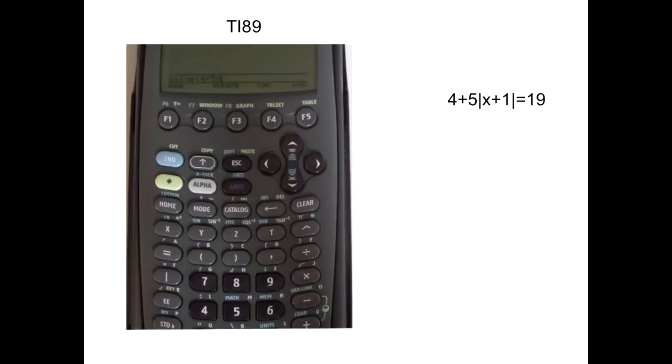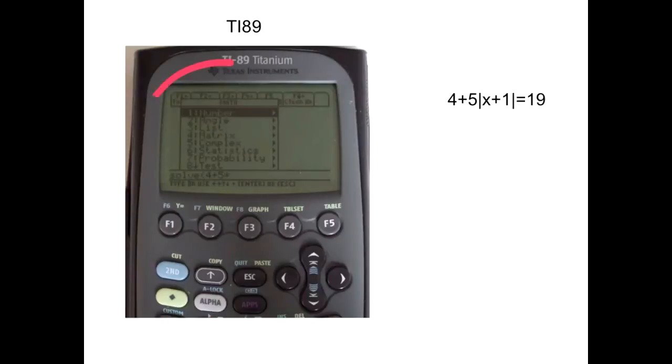To input the absolute value part, we have to go to second math, which is this second blue key. Hit that first, and then hit this blue math, which is the 5 key. Then this drop down box appears. We want to choose number 1. Just hit your enter key.